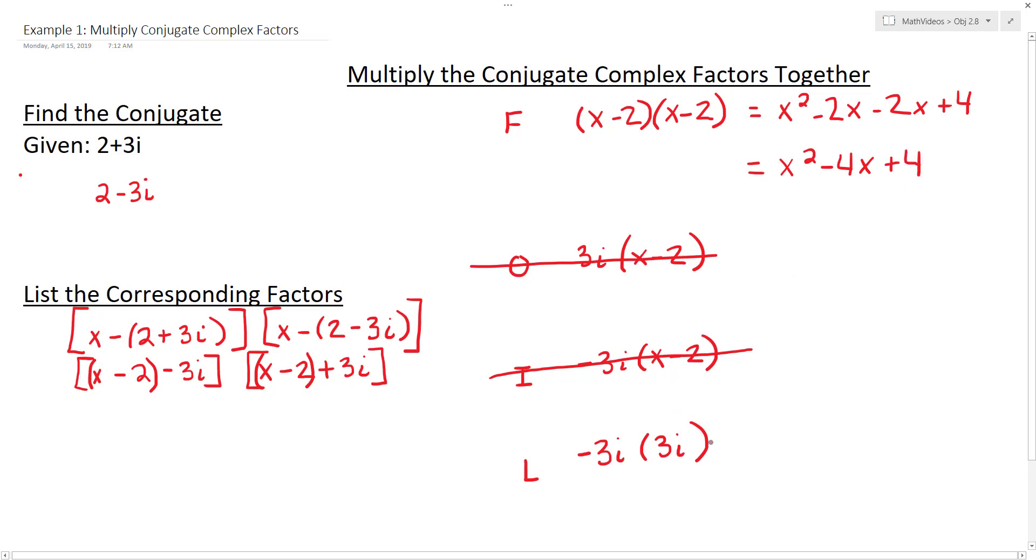And then when we go to do the last piece, a negative 3i times a positive 3i would be negative 9i squared. And then we know that i squared is negative 1, so replace i squared with negative 1 as a factor. And so you get negative 9 times a negative 1, which is a positive 9. So taking your first and your last piece and adding them together by combining like terms,